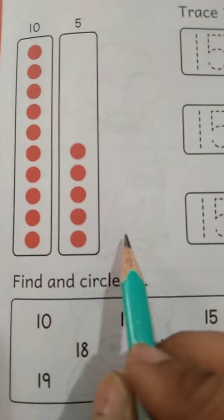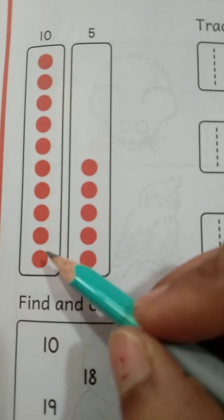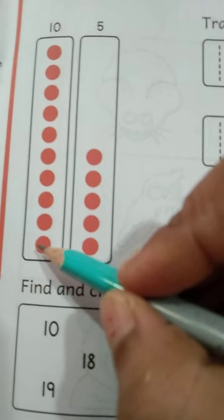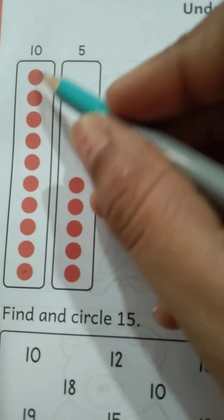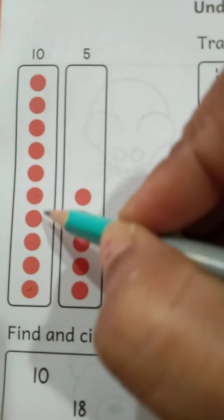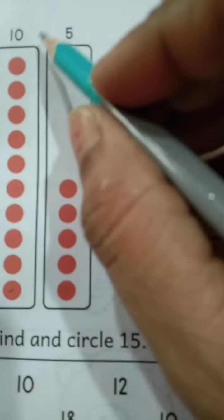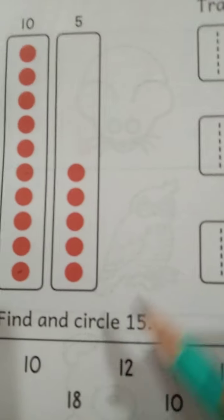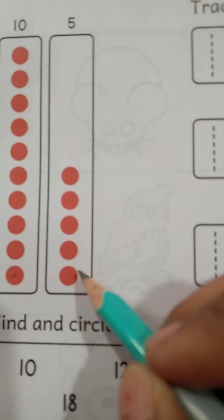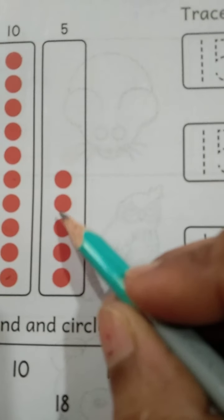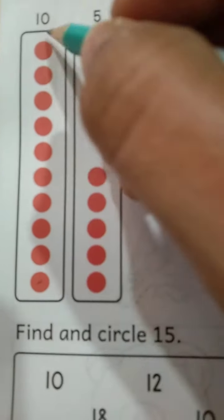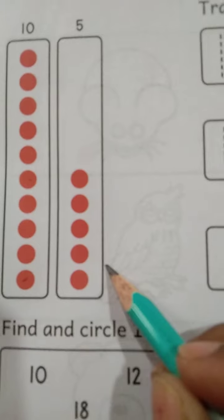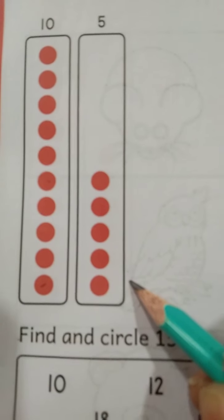So here we have two sticks. And as we used to do, just count these bindis: 1, 2, 3, 4, 5, 6, 7, 8, 9, 10. So one stick of 10 is 10. And the other stick has 1, 2, 3, 4, and 5 bindis. So one stick of 10 and 5 more will be 15. 10 and 5 more will be 15.